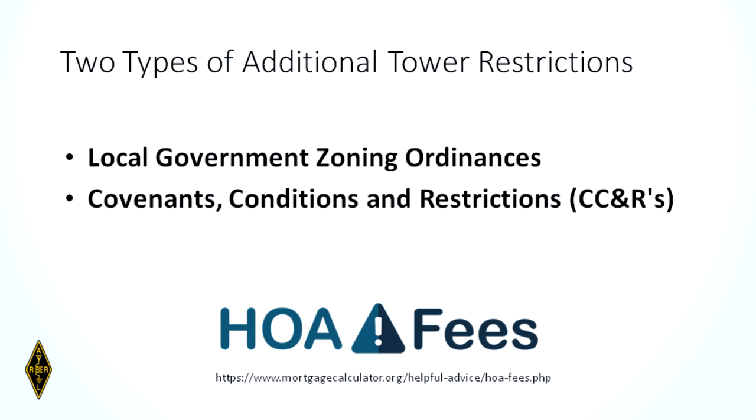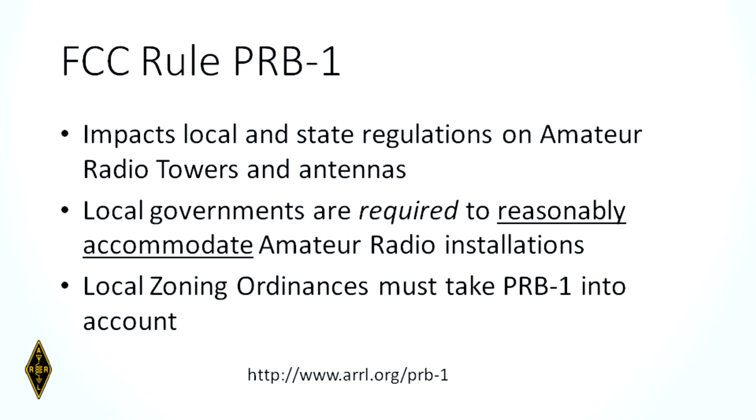There are additional tower restrictions. If you're in a homeowner's association, you may have restrictive covenants. The worst one for hams is the one that says no towers, no antennas — and there is no relief at the present time. The ARRL is working with the FCC to try to get relief from restrictive HOA covenants, but it hasn't happened yet. However, there are also sometimes restrictions in local government ordinances and zoning — and there, you do get some help with FCC rule PRB-1. That rule provides guidance to city and county governments that zoning restrictions must reasonably accommodate amateur radio installations.